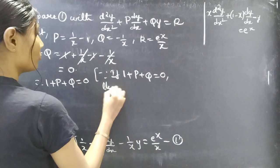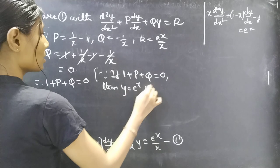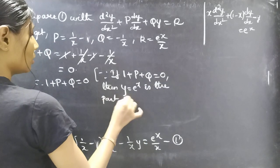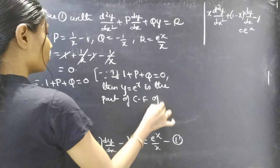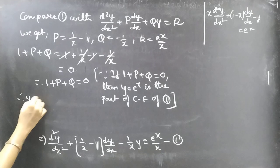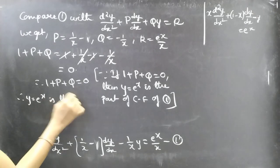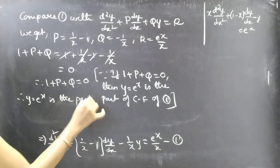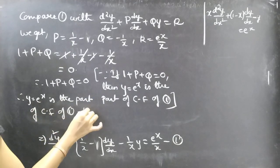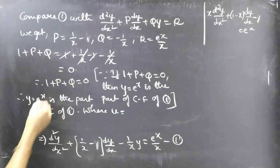Since 1 + P + Q = 0, we know that y = e^x is part of the complementary function of equation 1. Therefore u = e^x is part of the CF of equation 1.